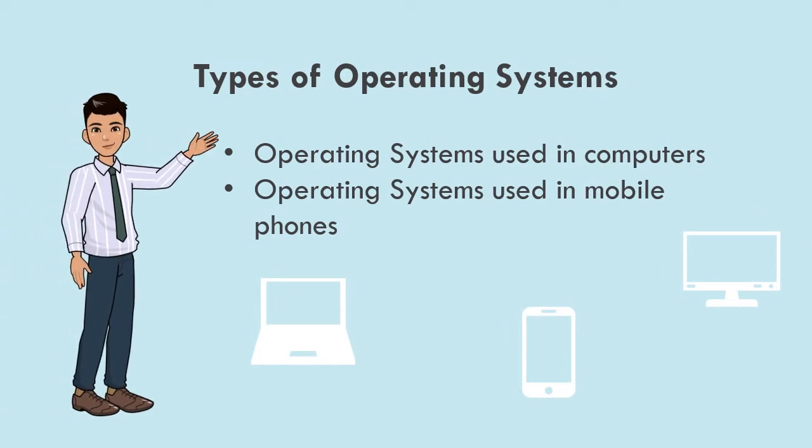Types of operating systems. We can divide them into two types: operating systems used in computers, and operating systems used in mobile phones.